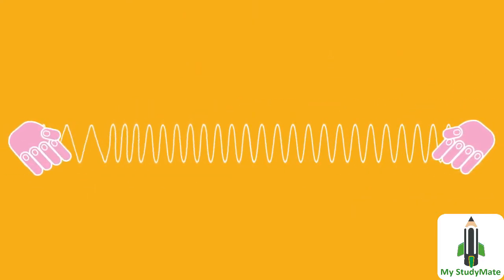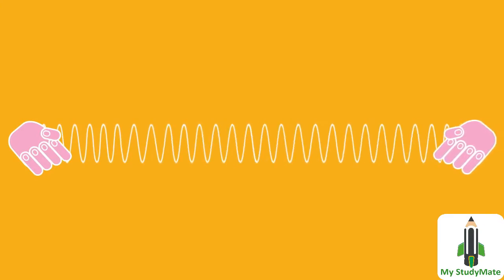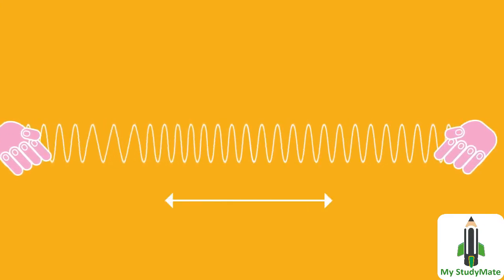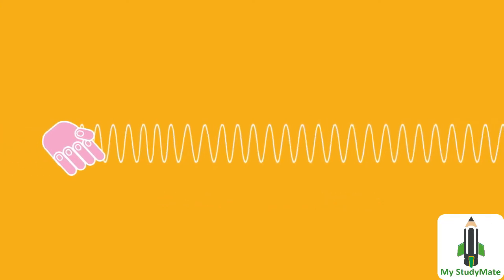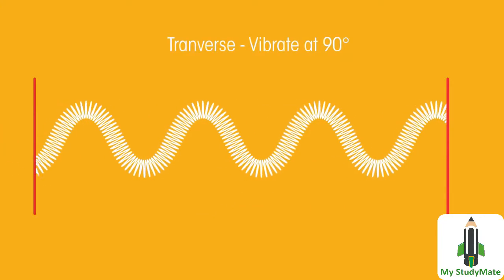We can simply think of it as in longitudinal wave, the hand pulses horizontally, pushing and pulling, and the wave energy also moves horizontally back and forward. Whereas in transverse wave, the hand moves up and down, but the wave energy still moves horizontally.